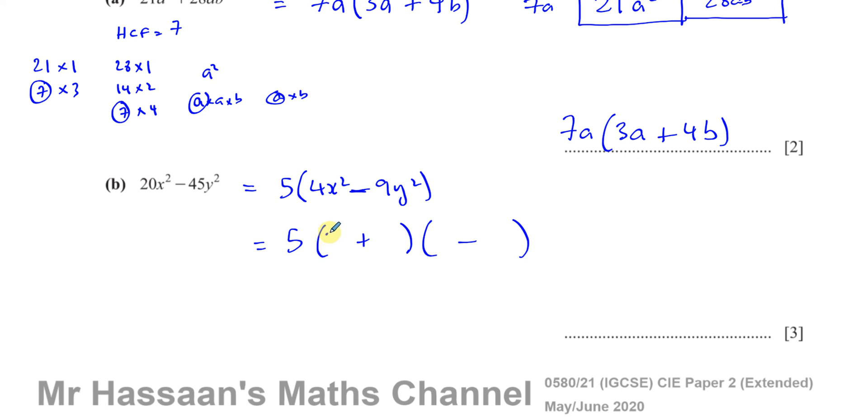And then we write down the square root of each of these terms in the spaces. So we've got 4x², which is 2x. The square root is 2x. 9y². The square root is 3y. So you put 2x and 3y in these spaces here on both brackets.